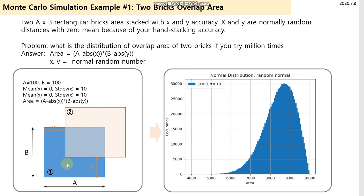X and Y are normally distributed random distances with zero mean, representing hand stacking accuracy. X is the horizontal distance and Y is the vertical distance.